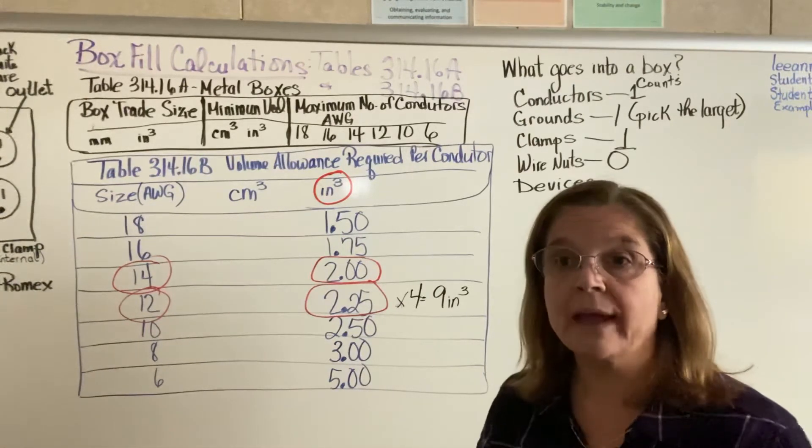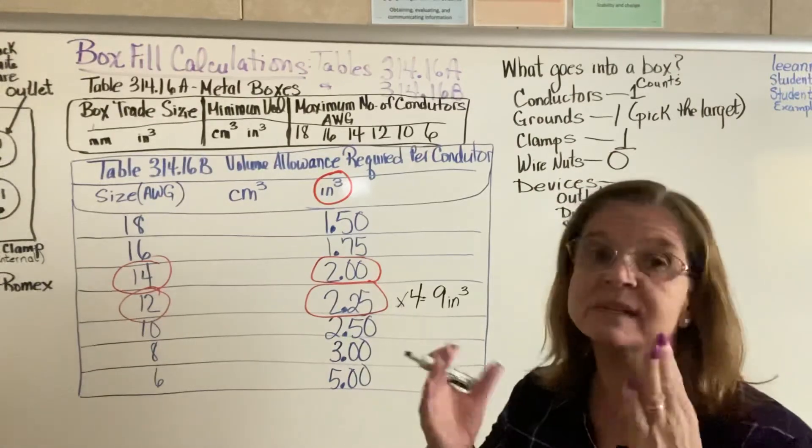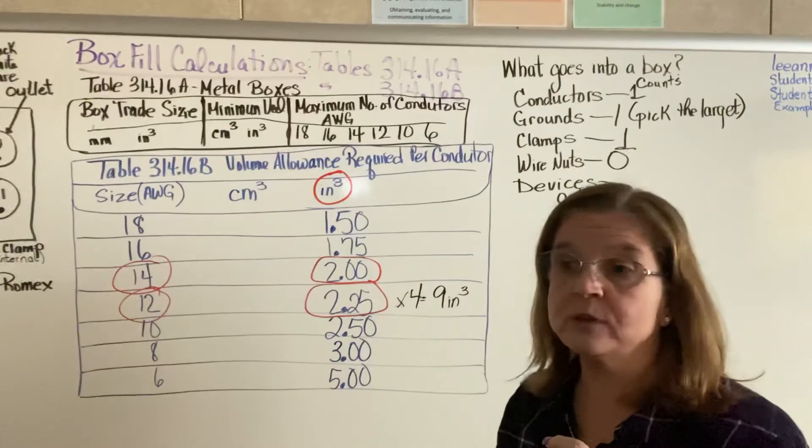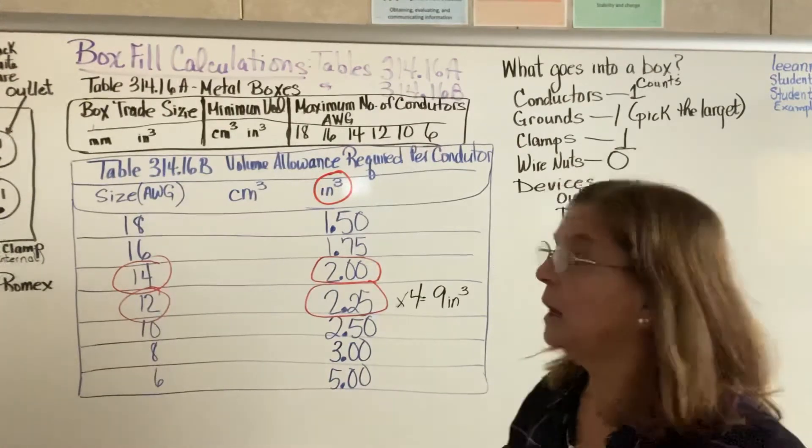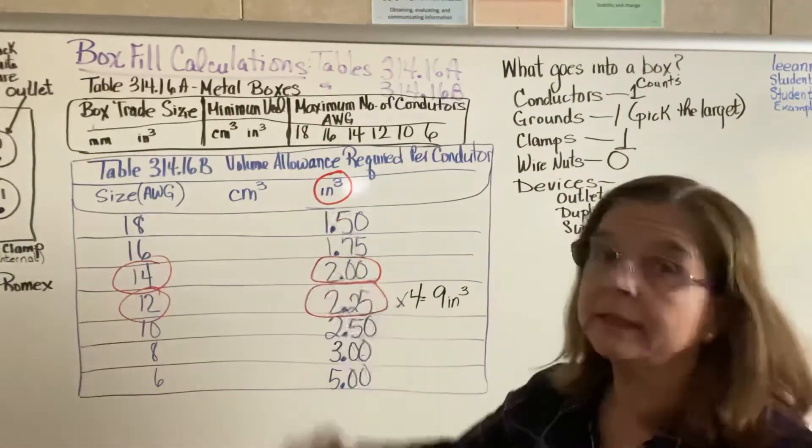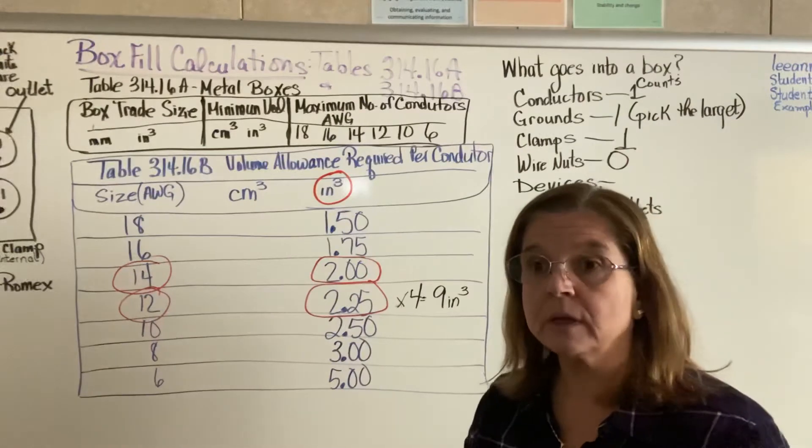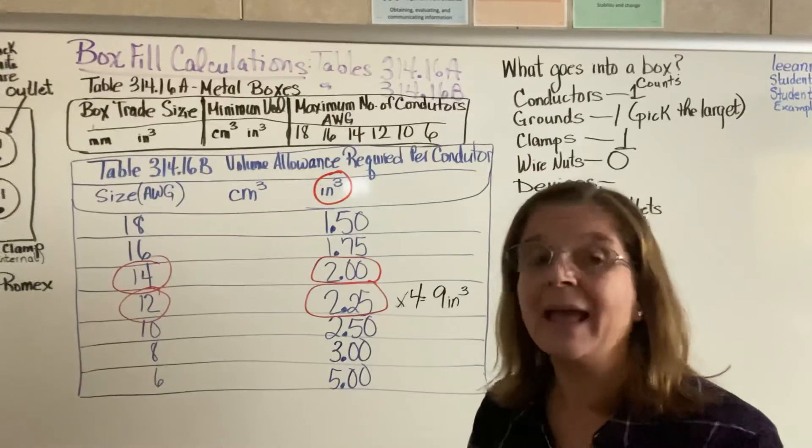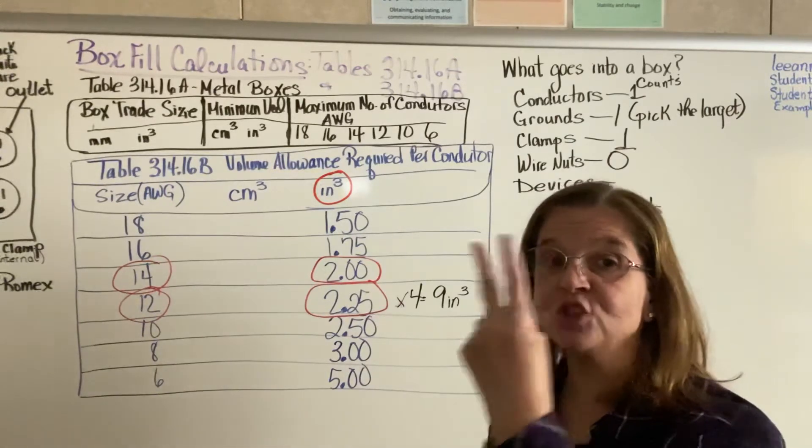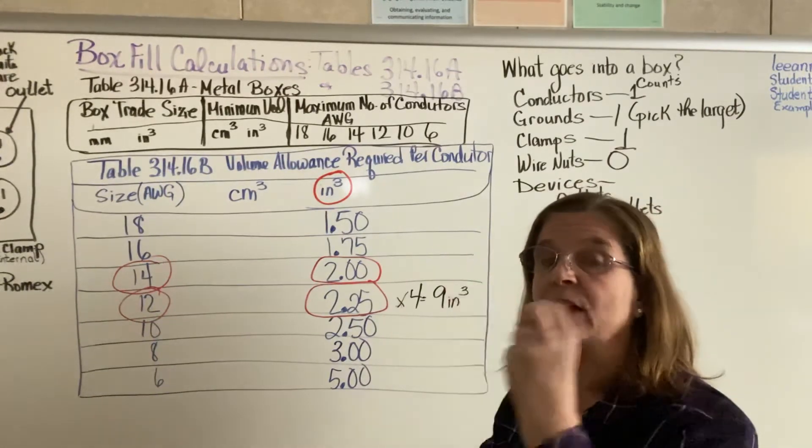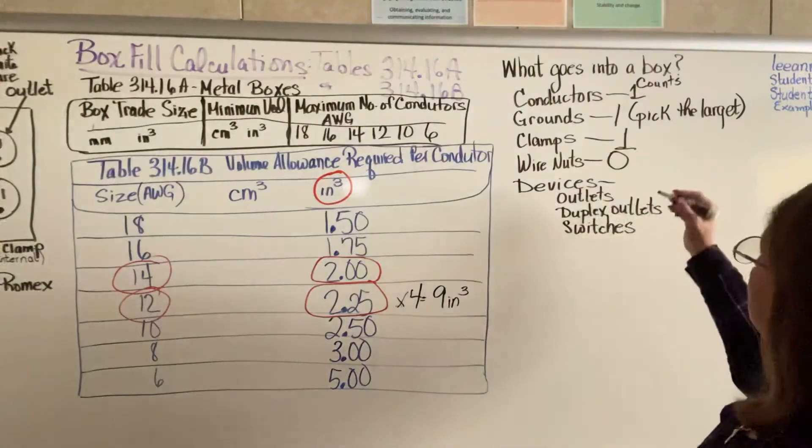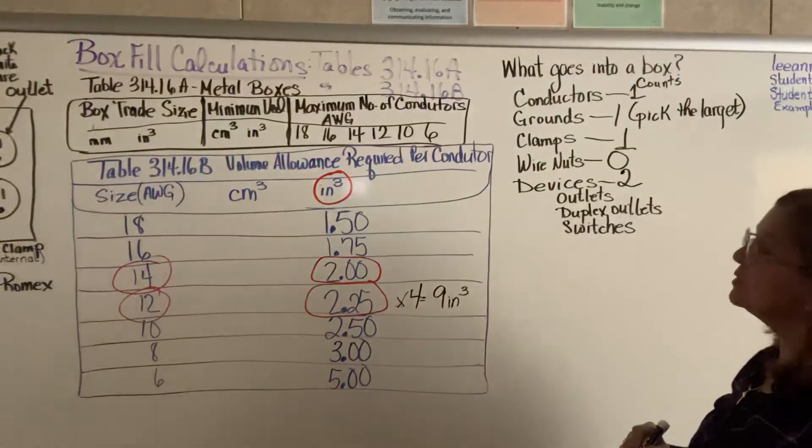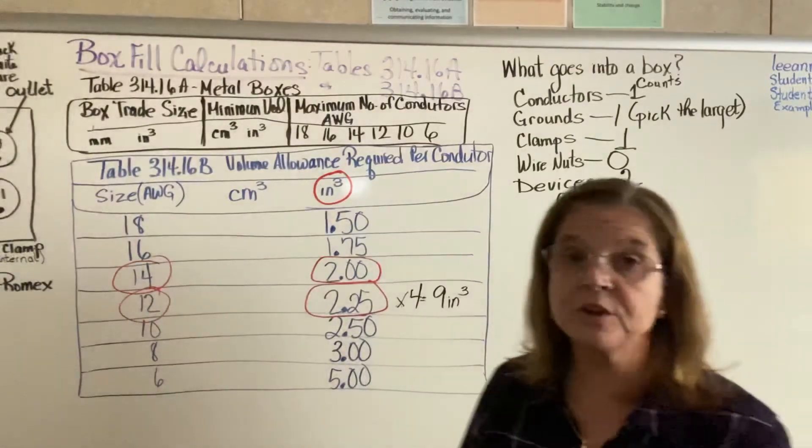And the last thing that you have is the actual device. You have this box. What are you using it for? Are you going to use it to install a switch, an outlet, a duplex? Whatever device you are going to put in that box, every device counts as two. So that's a typical box, what you would have inside.